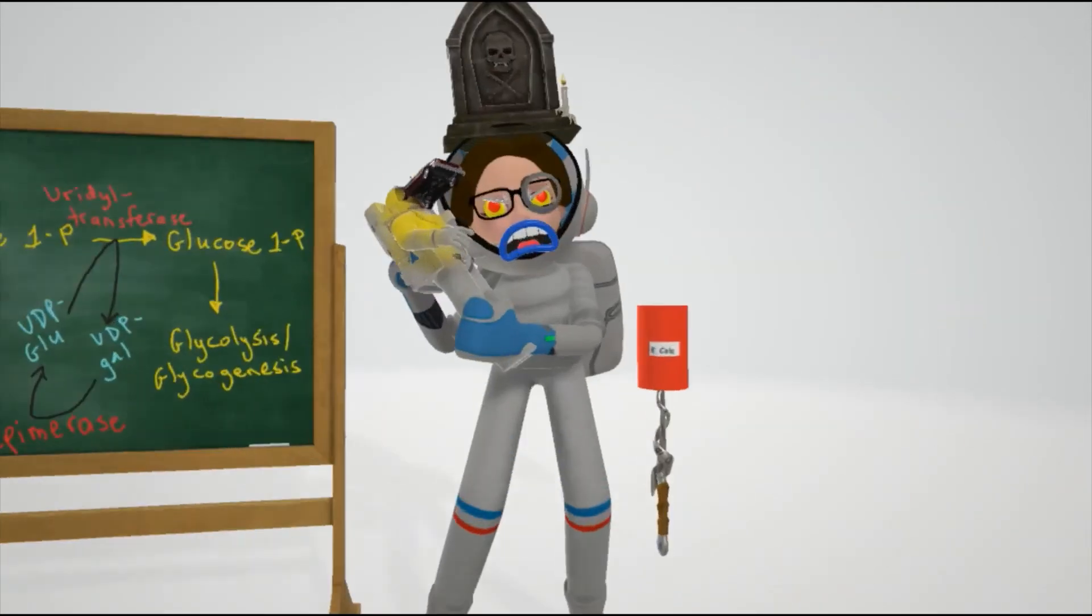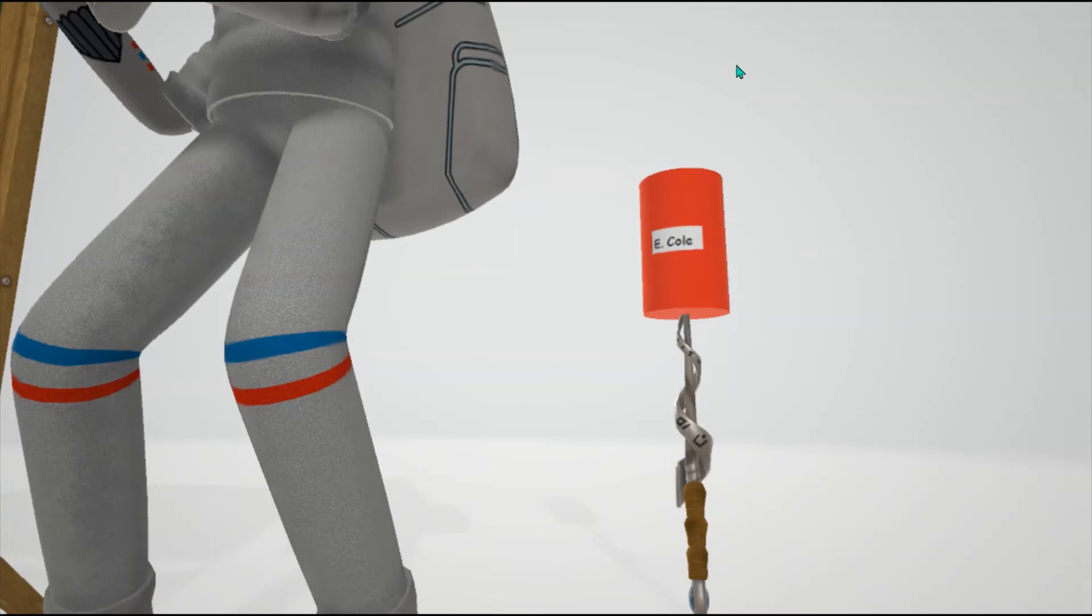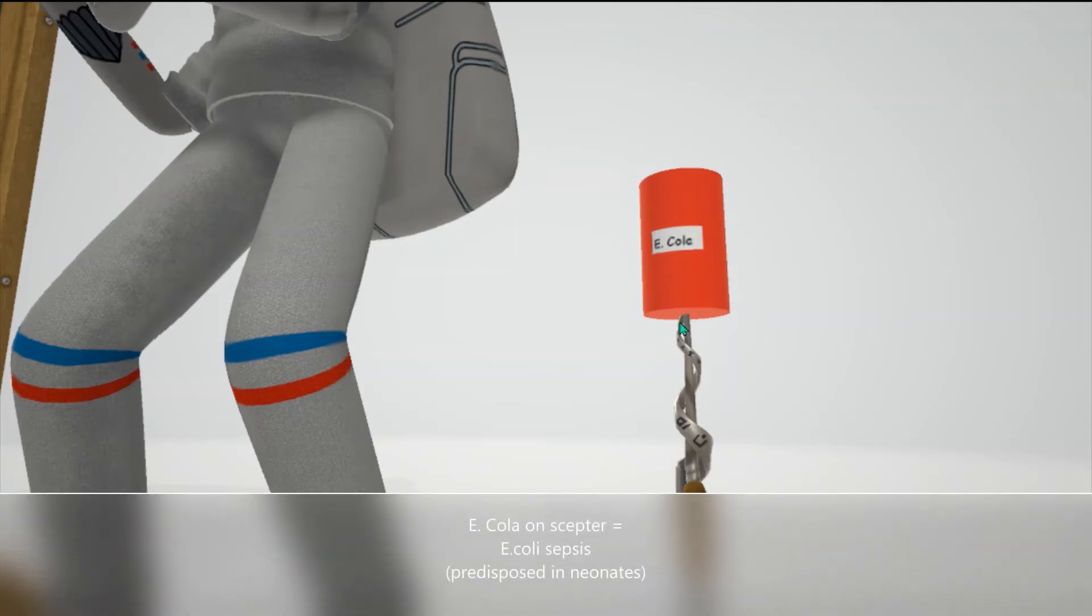If you take a look behind her, there's this cola can that says E-cola on it. The E-cola can on top of the scepter has to help us remember the E-coli sepsis. Classic galactosemia can predispose to E-coli sepsis in neonates.